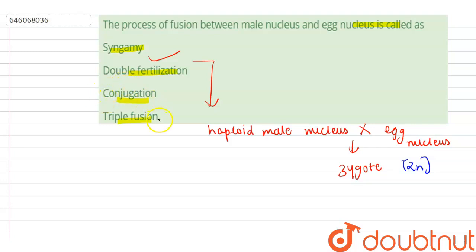Now, triple fusion. Triple fusion is the fusion of male gamete with the secondary nucleus, which is a diploid structure. Male gamete is a haploid structure. This results in the formation of primary endosperm nucleus, because secondary nucleus is diploid and male gamete is haploid.